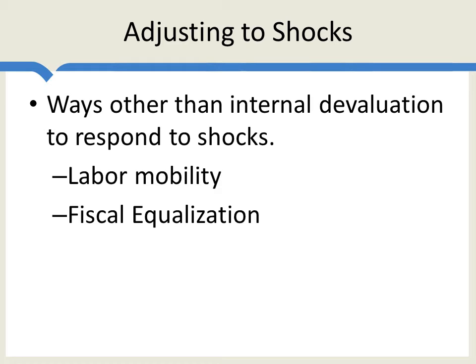People in the United States think of themselves as Americans first and Virginians second. In the European Union, they think of themselves as Greeks first and Europeans second. So for both of these reasons — labor mobility and fiscal equalization — it's easier to have a common currency in the United States, namely the dollar, than it is to have a common currency across Germany and Greece.